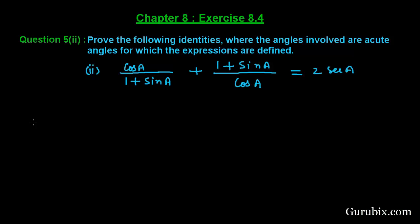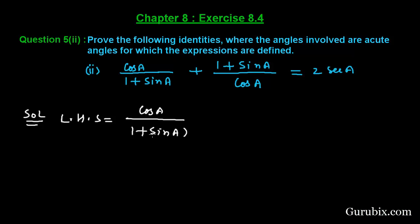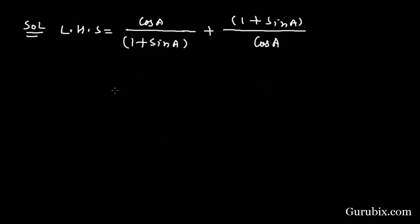Let us see how to prove this identity. We shall start with the left hand side, which is cos A over (1 + sin A), plus (1 + sin A) over cos A. We shall put (1 + sin A) in brackets — this is very important — and now we shall take the LCM.